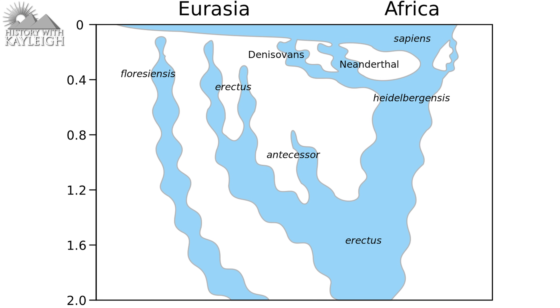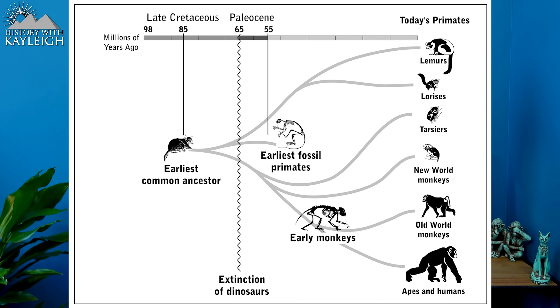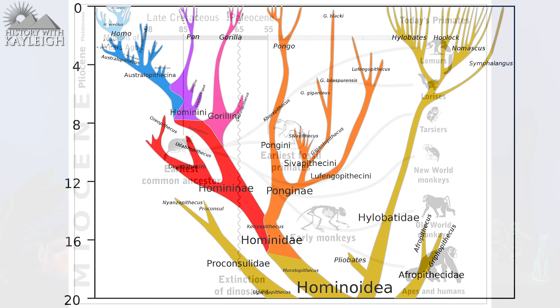Last but not least: Homo sapiens — us modern humans. We emerged some 300,000 years ago, with the oldest known Homo sapiens fossils found at Jebel Irhoud in Morocco dating back to 300,000 years ago. So there you have it: a detailed explanation of the evolutionary timeline from the very first primates to modern humans — 85 million years of evolution in one concise video. The reason there are still monkeys and apes is that their ancestral species forked off so long ago and went their own evolutionary route.